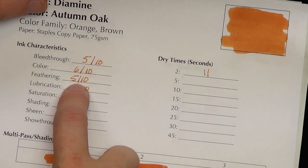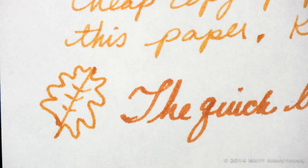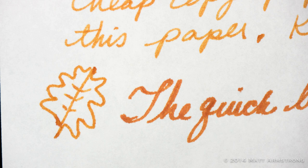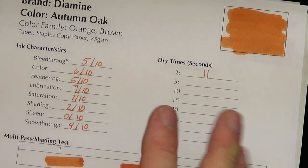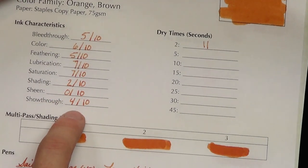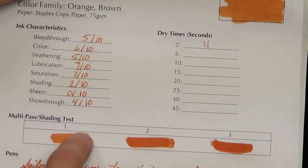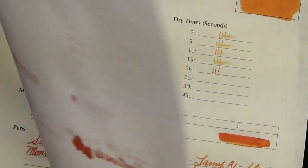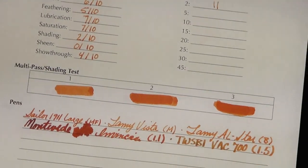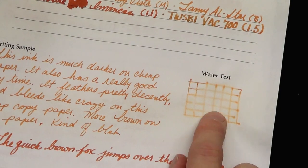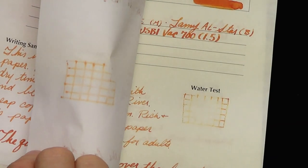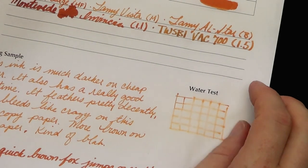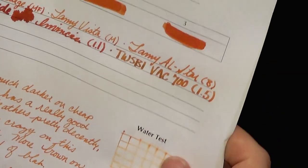Feathering, it feathers some, not terribly, but you can look at the photos on penhabit.com and see the specifics. Saturation, it's still fairly saturated. Lubrication, it's, you know, it's still fairly lubricated. Shading drops way down. There's just not anywhere near as much shading on this paper as there is on the others. No sheen and show through is pretty bad, but that's honestly because there's so much bleed that the show through has to be bad along with it. It is slightly more water resistant here, but I think that's because it just soaks right through the paper. That has more to do with why it's water resistant than the ink actually being water resistant.